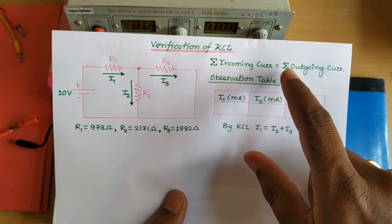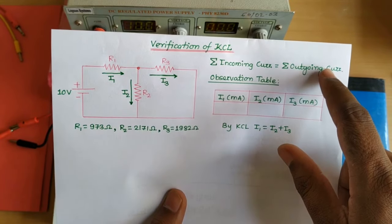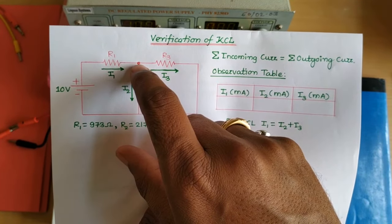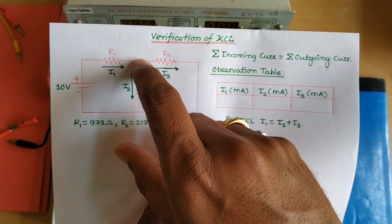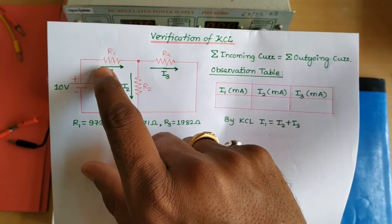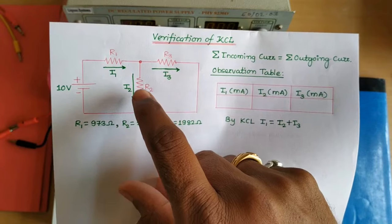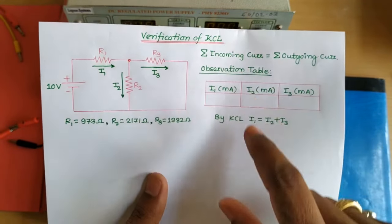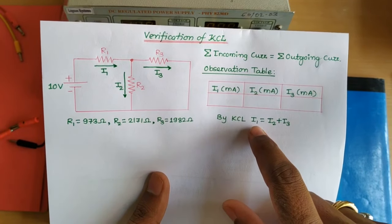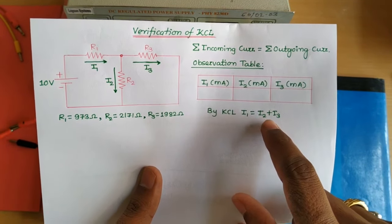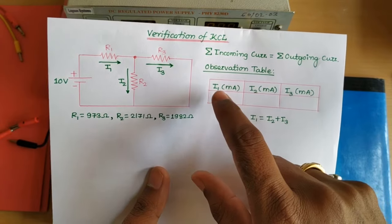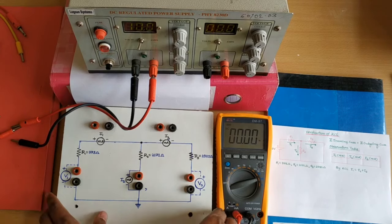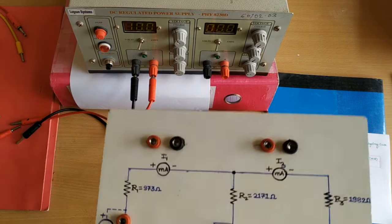KCL states that the algebraic sum of all incoming currents is equal to the algebraic sum of all outgoing currents at any node. As far as our circuit is concerned, we have a node, and at this node we apply KCL. I1 is the incoming current and I2 and I3 are outgoing currents. So as per KCL: I1 equals I2 plus I3. We have to measure I1, I2, and I3.